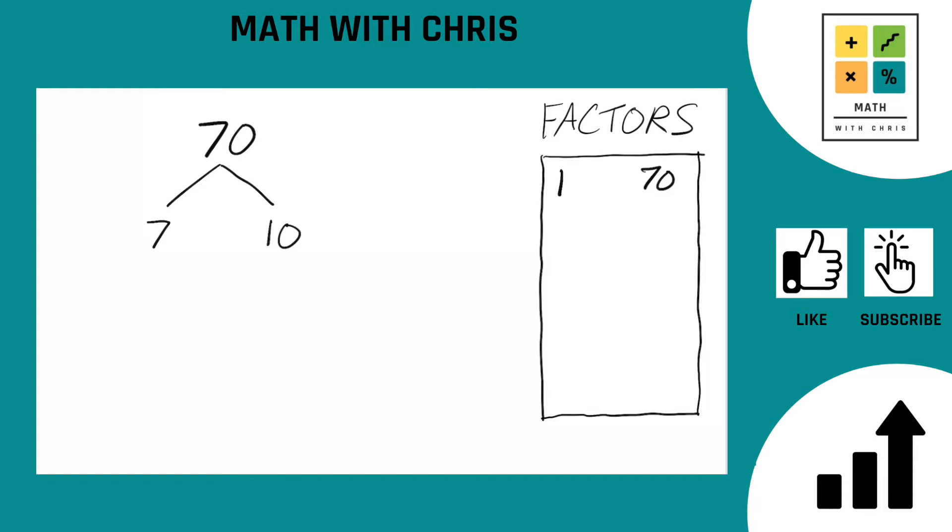Is 7 a prime number? It is. Circle it. Done with that. What about 10? Can 10 be broken down further? Yes, it can. 10 is 2 times 5. 2 and 5 are both prime numbers. Circle both of those.